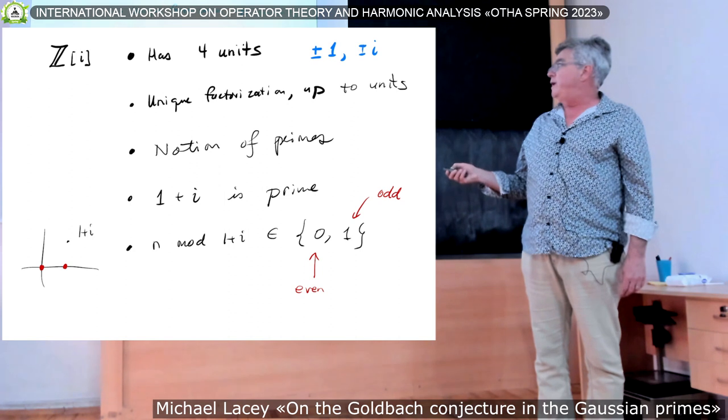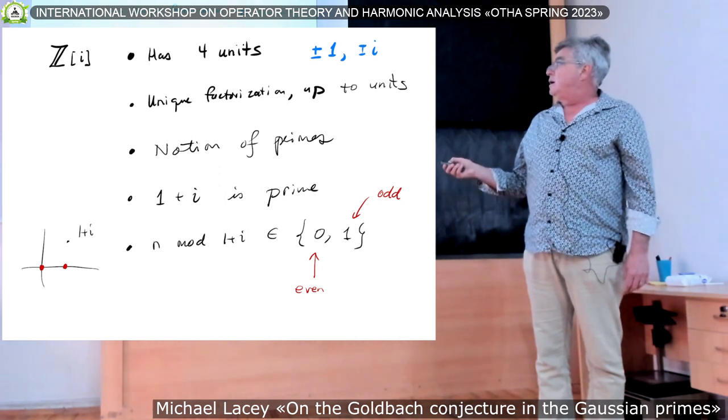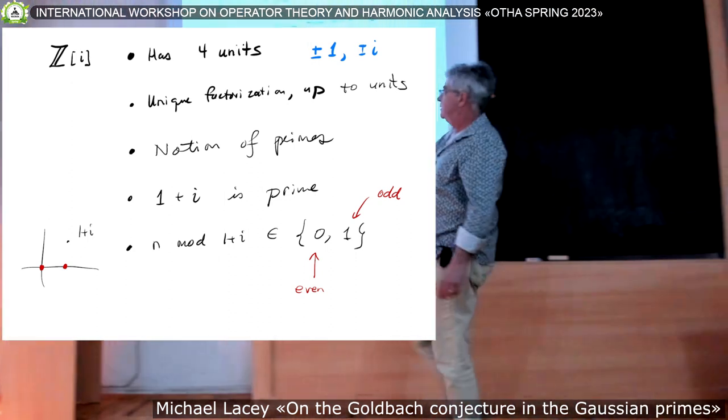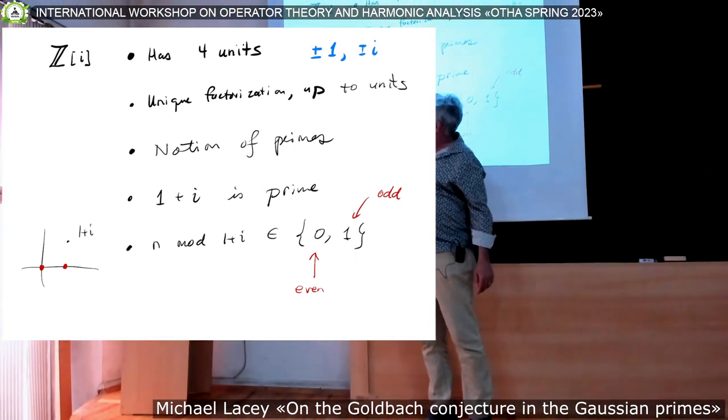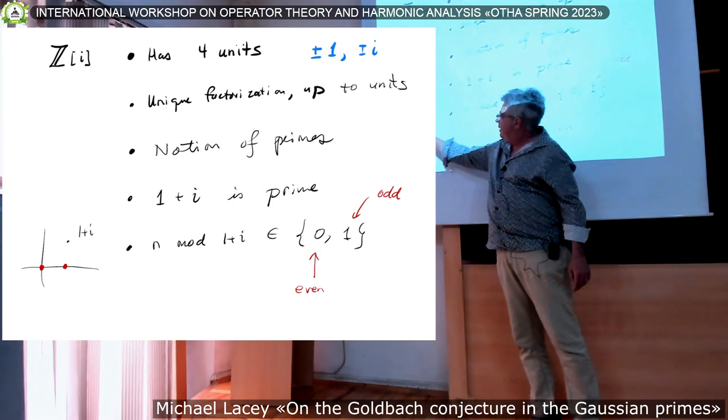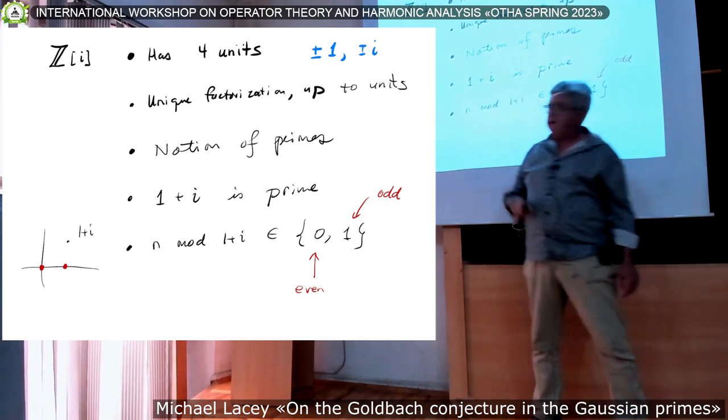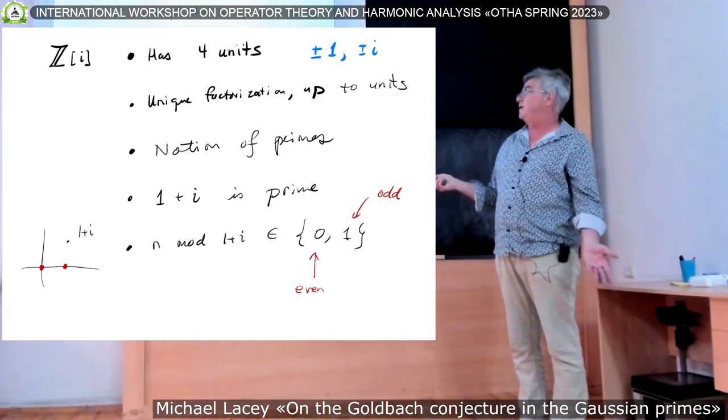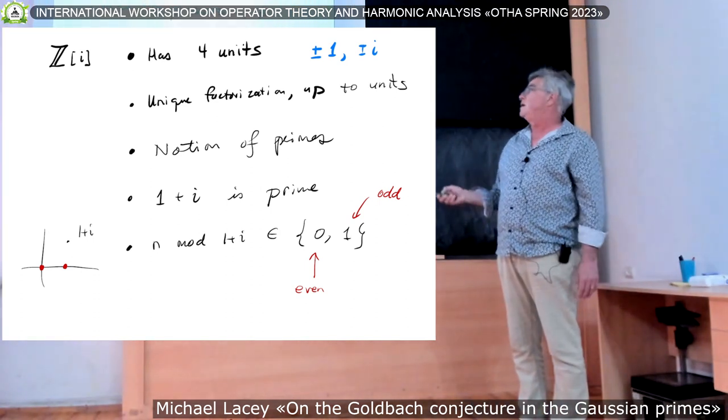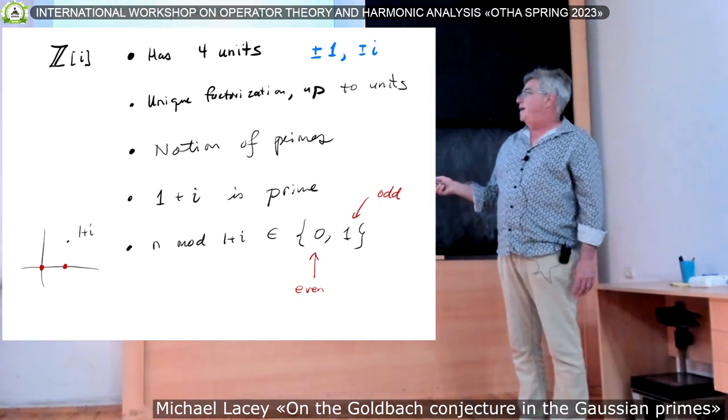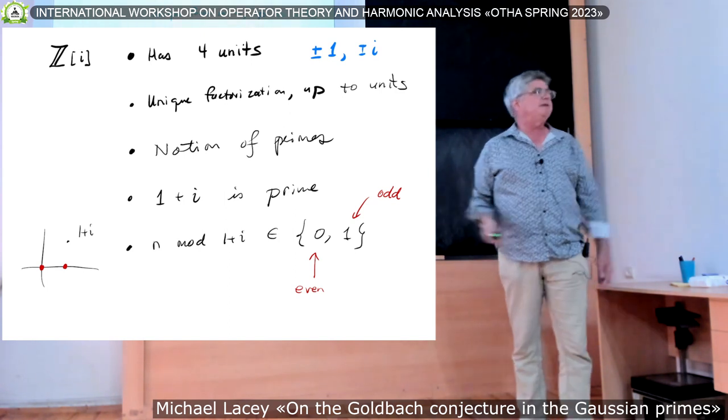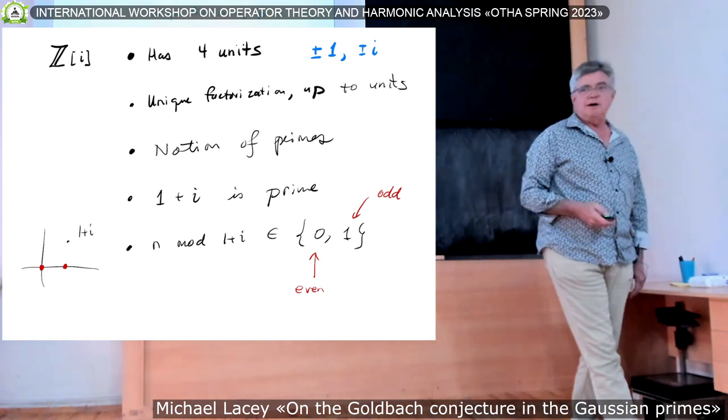And so, so what is even and odd? Well, one plus i is here. The only other integer that, the only integers that you have are zero and one. If you take the integer, if you take an integer mod one plus i. So you get, if you look at n mod one plus i, it's either zero or one, and of course zero corresponds to even, and one corresponds to odd.